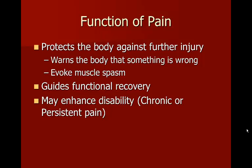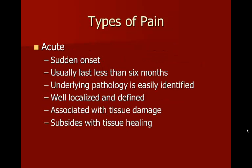Pain may also enhance disability, which is mostly seen in chronic or persistent pain — in an athletic training setting you probably won't see that as much as in a clinical or hospital setting. Acute pain is usually sudden onset, lasts less than six months, and the underlying pathology is easily identified. For example, a patient may say they were running, stepped off a curb, felt a pop, and now it really hurts. It's usually well localized, defined, and associated with tissue damage.